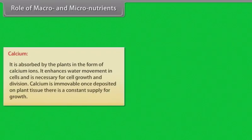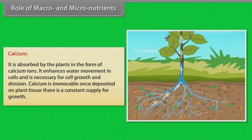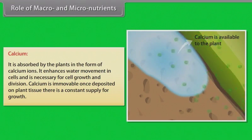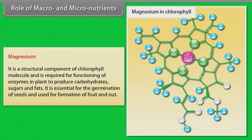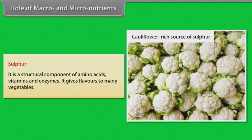Calcium: it is absorbed by plants in the form of calcium ions. It enhances water movement in cells and is necessary for cell growth and division. Calcium is immovable — once deposited on plant tissue, there is a constant supply for growth. Magnesium: it is a structural component of the chlorophyll molecule and is required for functioning of enzymes in plants to produce carbohydrates, sugars and fats. It is essential for germination of seeds and used in formation of fruit and nut. Sulfur: it is a structural component of amino acids, vitamins and enzymes. It gives flavors to many vegetables.